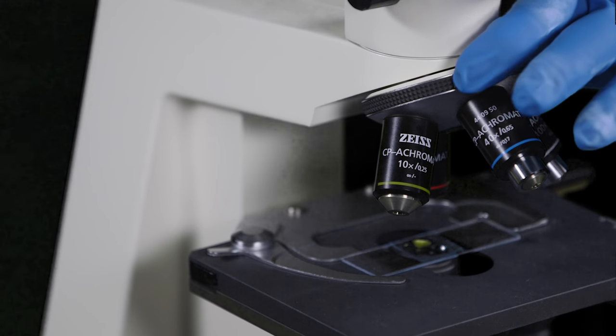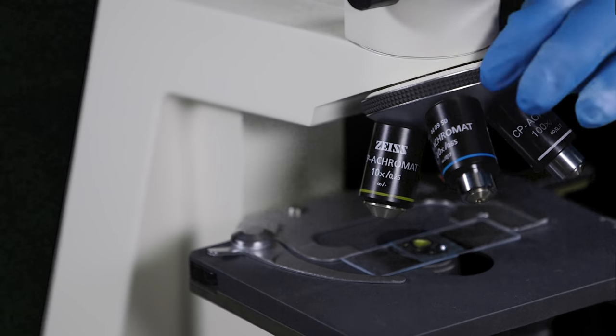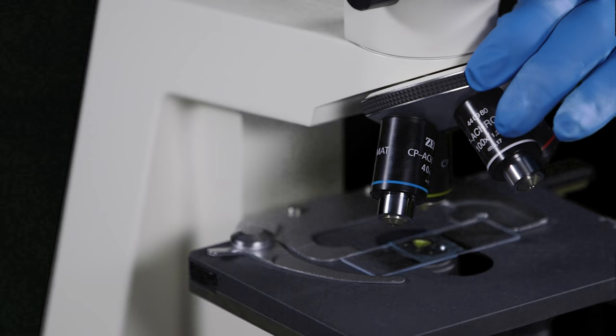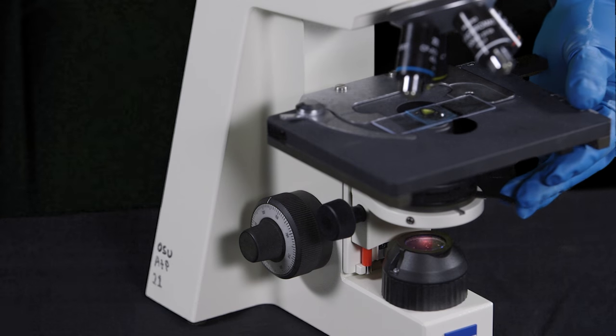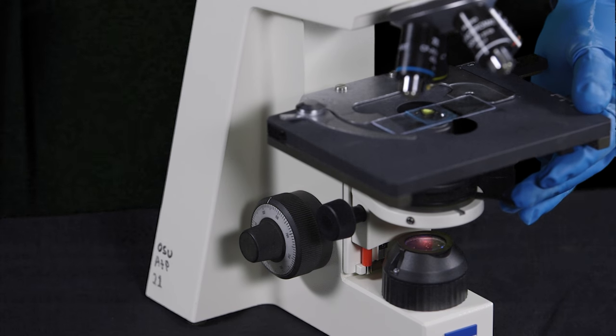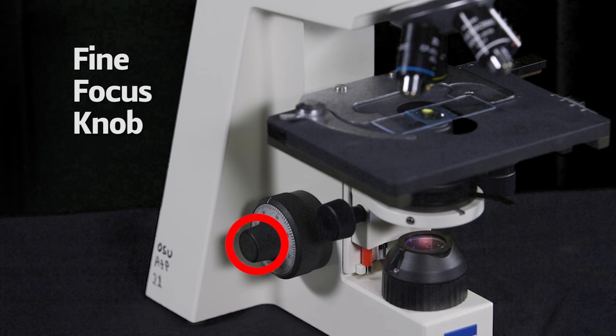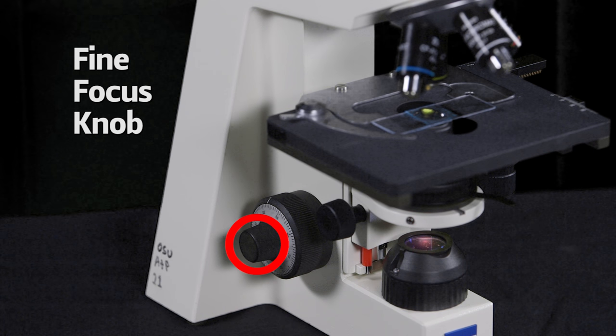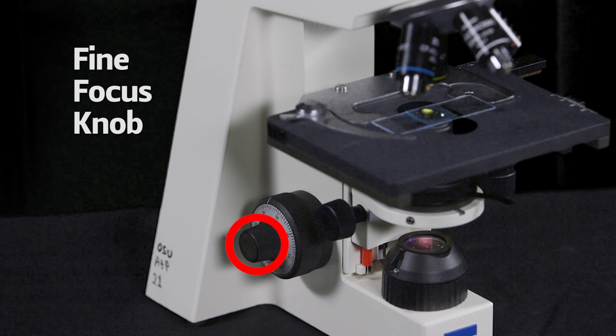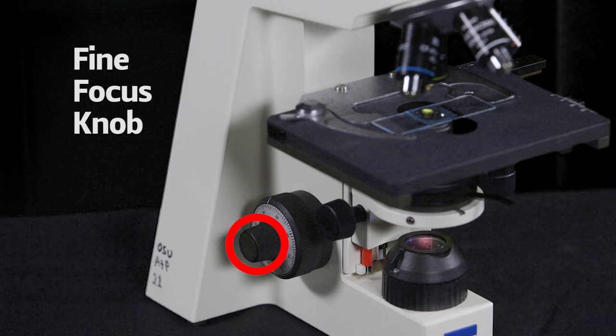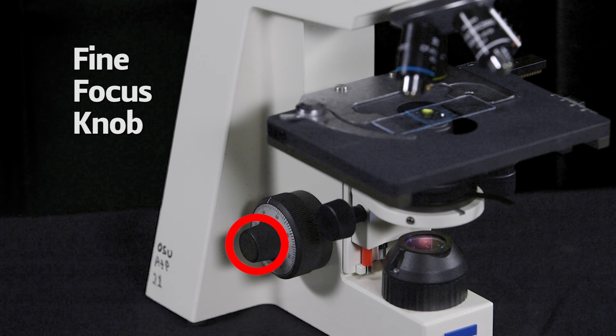When the specimen is centered and in focus, rotate the turret so that the next highest magnification clicks into place. From this point on, you will only be using the fine focus knob. Using the course focus knob could easily drive your slide into the objective and damage both the slide and the scope.